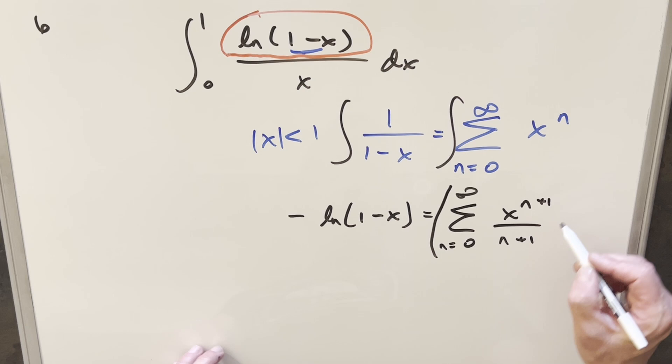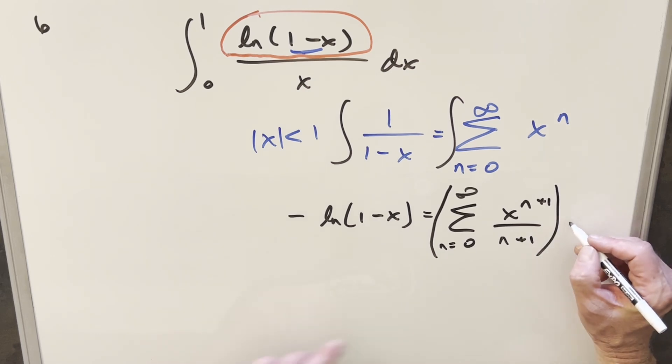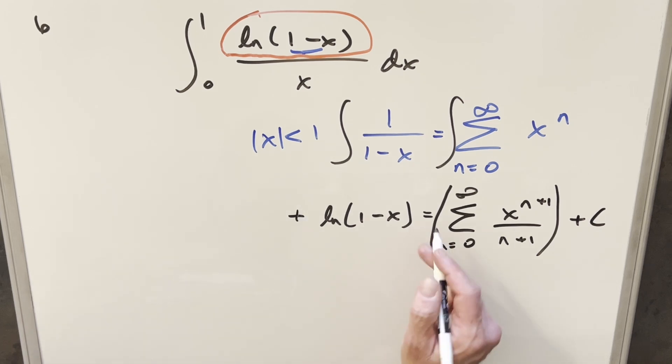And of course, we're going to need a plus c on this thing. So let me make it clear that the plus c is not part of the sum. And one other thing I need to do is let's bring this minus sign on the other side. I should have given myself more space, but we're going to have a minus sign right here.